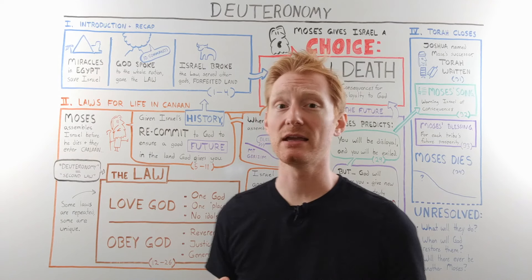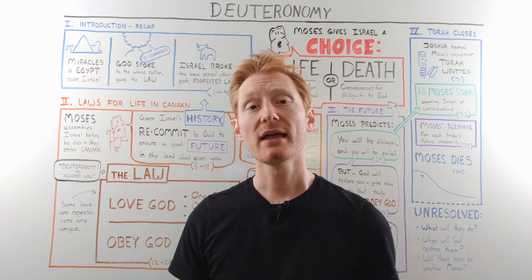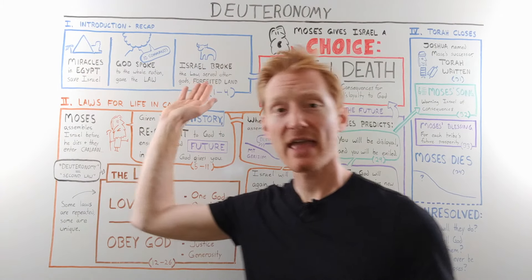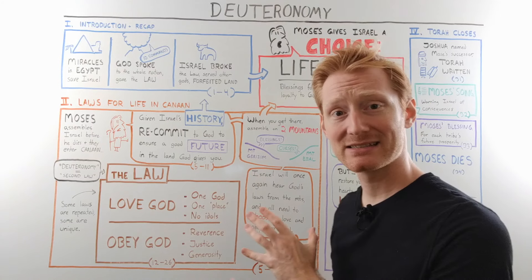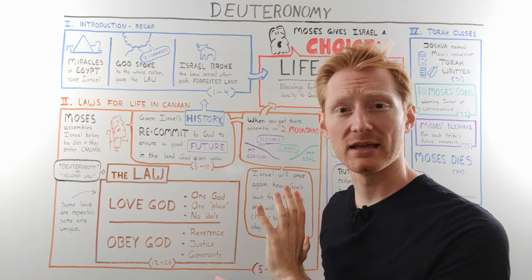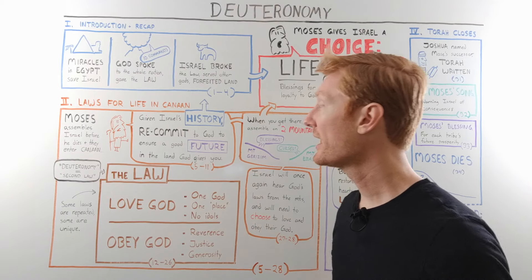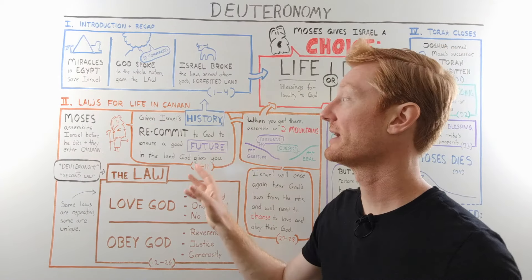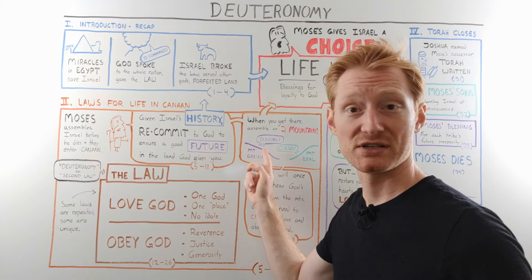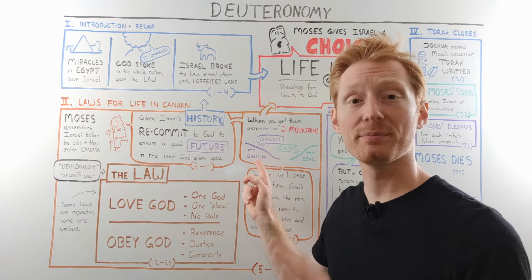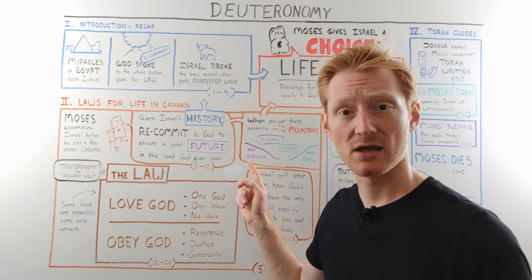Moses is really hoping that people choose the blessings that come with obeying God. So in light of everything in Israel's history up to this point, Moses says in the next section: when you get into the land, recommit yourself to the laws God has given you. Once they get into the land, half the people should assemble on one mountain — Mount Gerizim — and say all the blessings that will come if they follow God's laws.